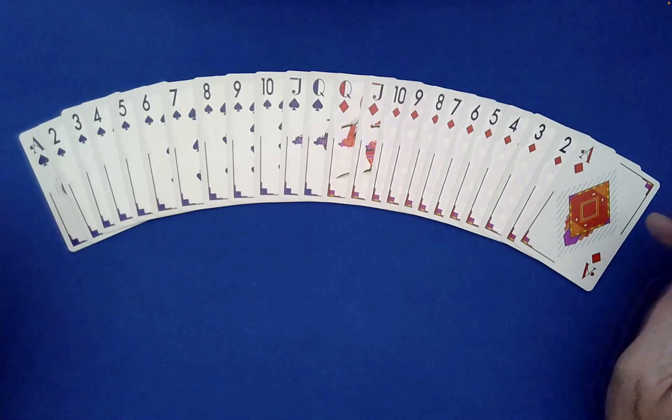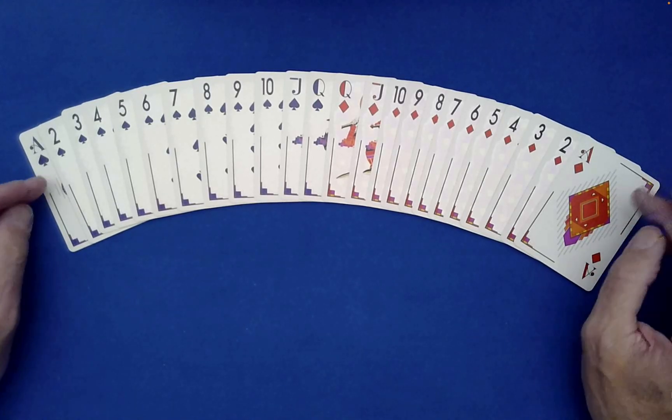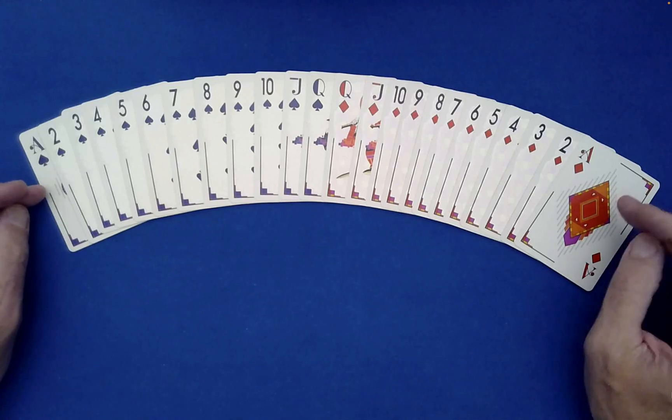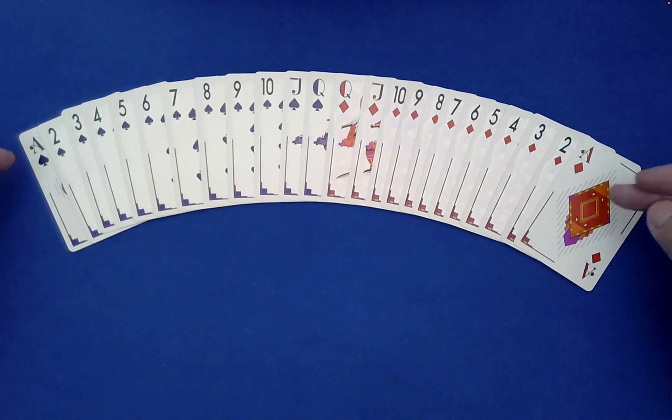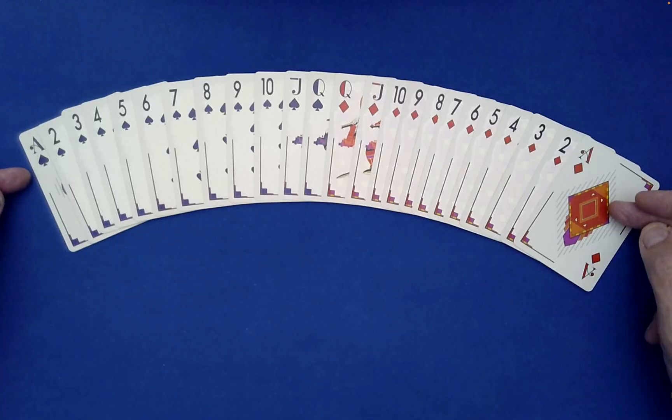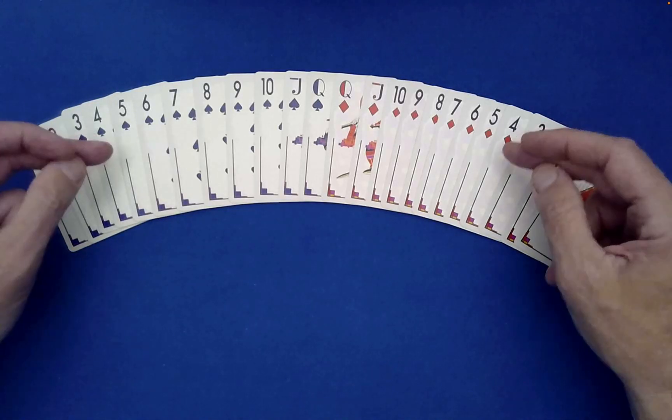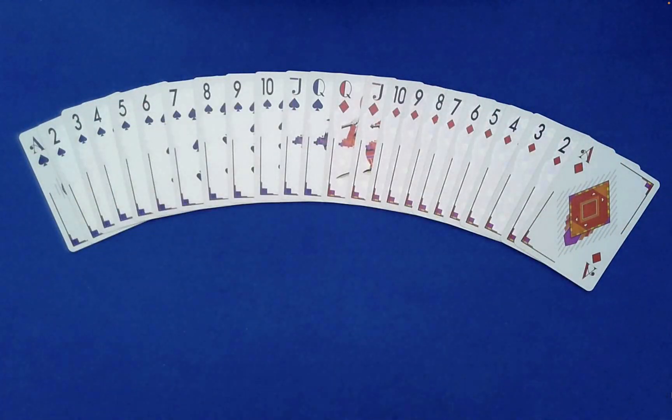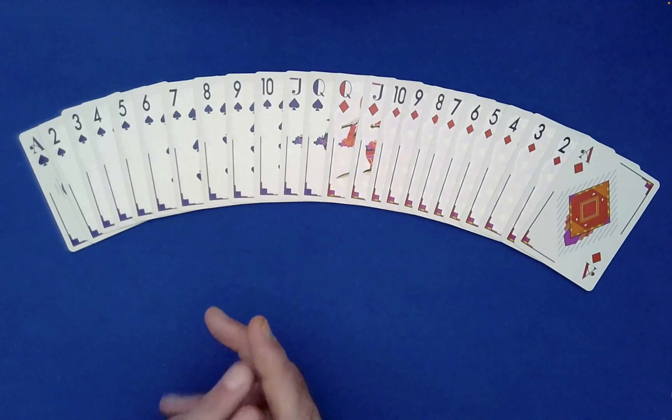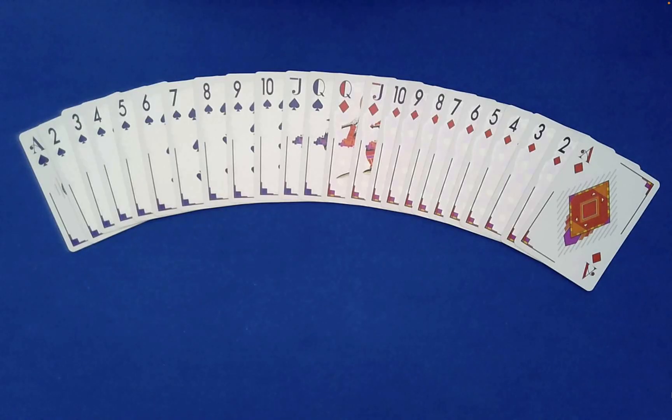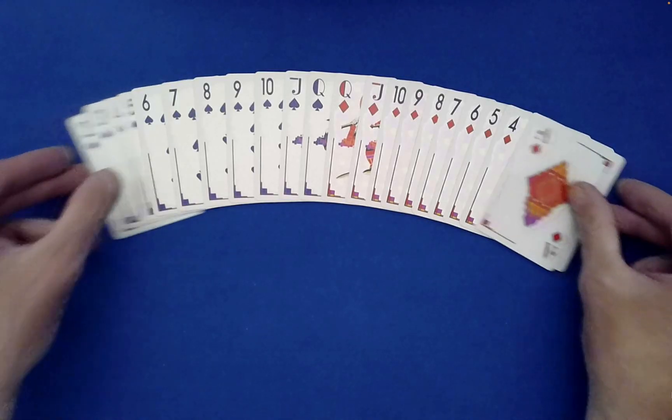So for example, if we just focus on card value, this packet is, quote, mirrored. Because on the outer ends, we get a pair of aces, twos, threes, fours, all the way to the center, which are a couple of queens. So this is a mirrored packet.